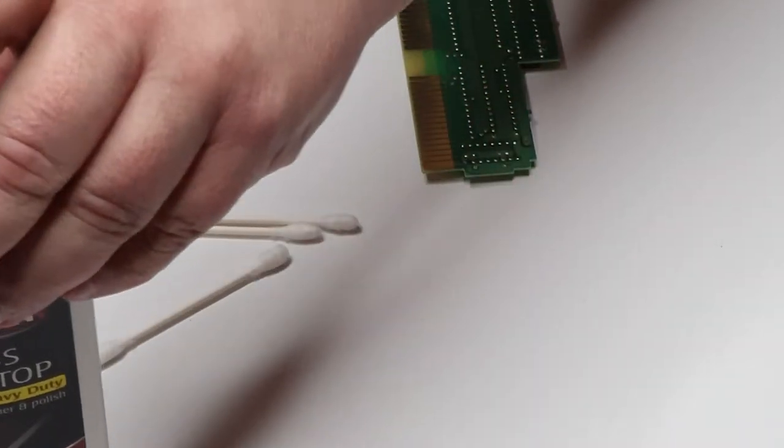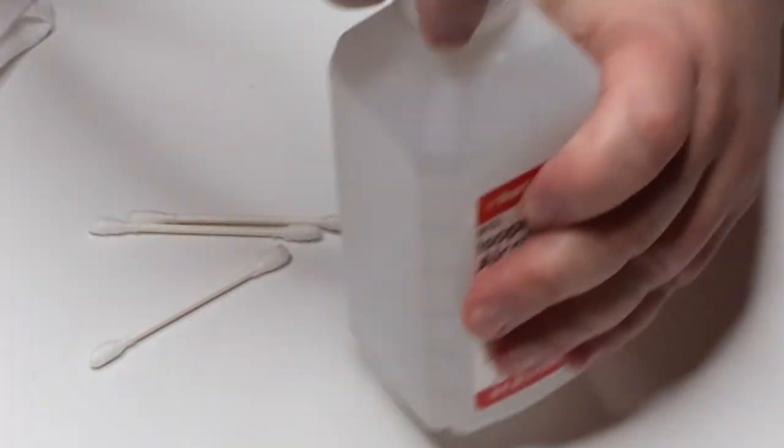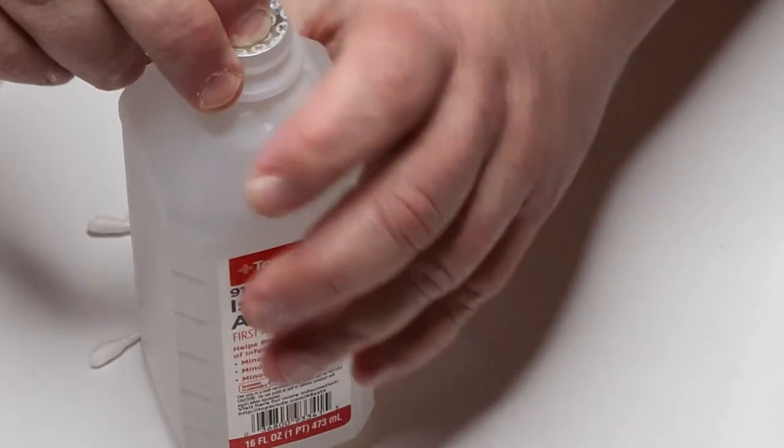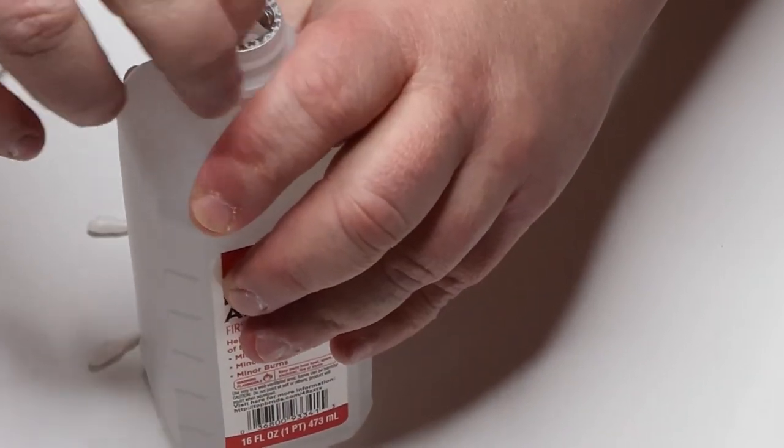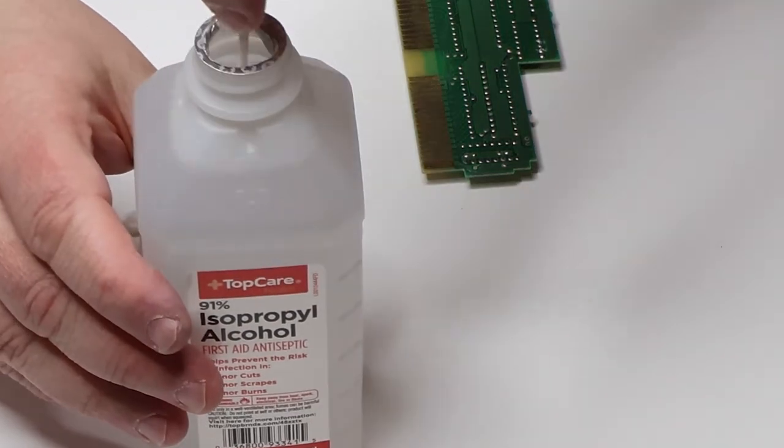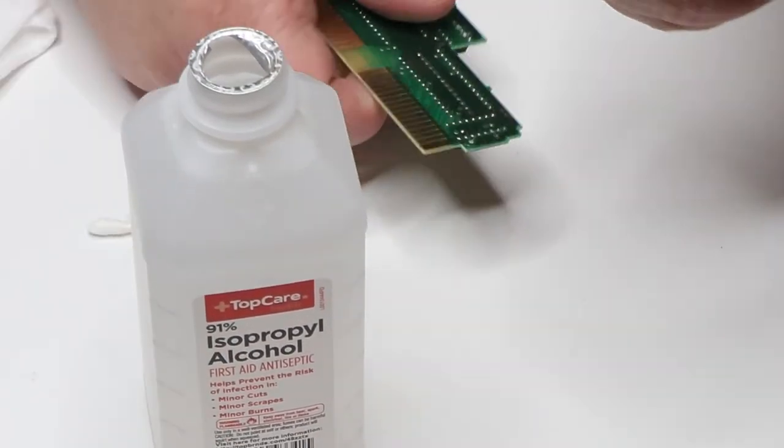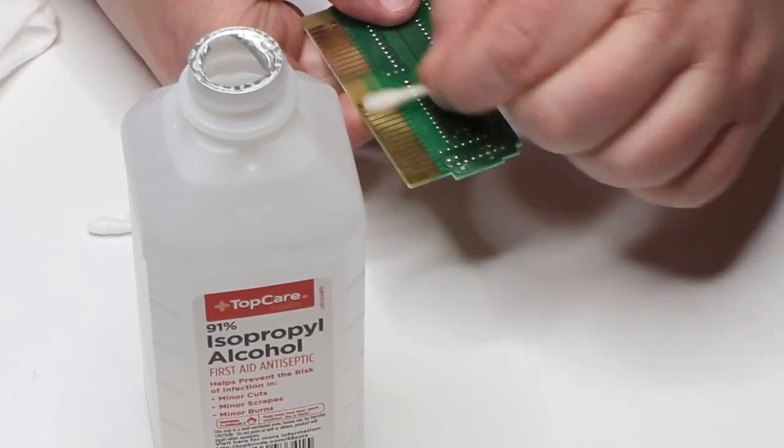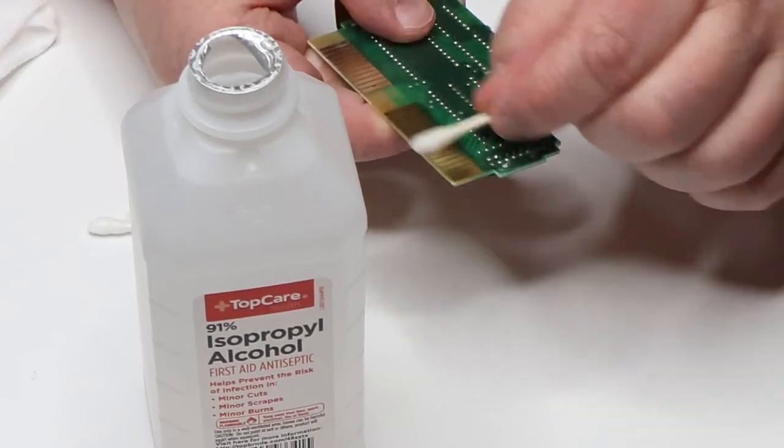So once we've finished working the front and back with the Wyman's, we're going to proceed on to our rubbing alcohol, the isopropyl alcohol. We're just going to take our cotton swabs and dip them in the alcohol and give it a nice little simple scrub.